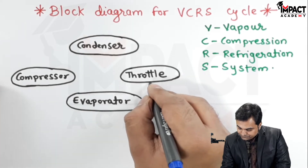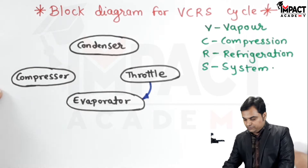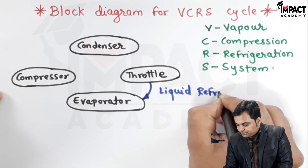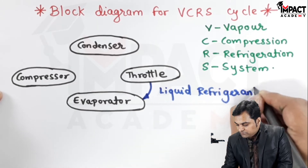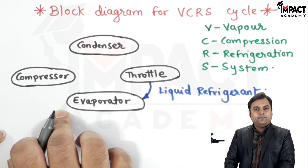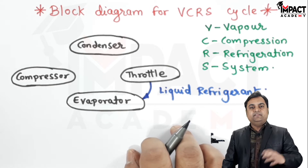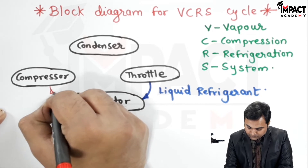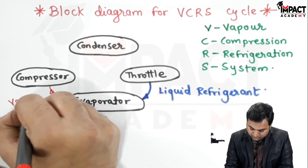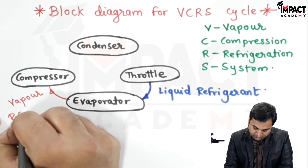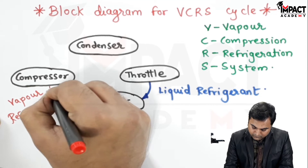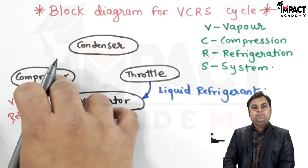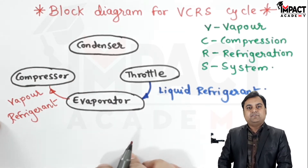The liquid refrigerant enters the evaporator, and inside the evaporator this liquid refrigerant goes on absorbing heat and then vaporizes. At the exit of the evaporator we get vapor refrigerant, which then gets compressed inside the compressor where its pressure and temperature are raised.